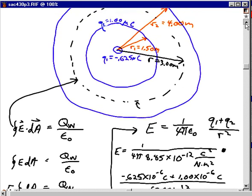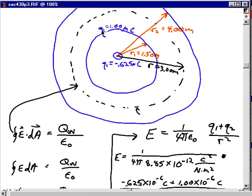Normally, you would think, well, it's a negative point charge, the electric field would be toward it. But we've actually got more positive charge inside this spherical shell than we do negative charge.